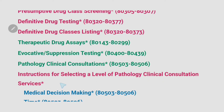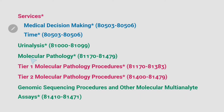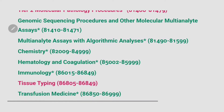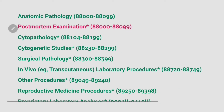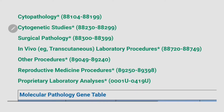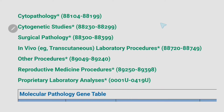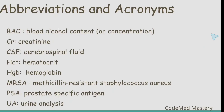Then we have instructions for selecting a level of pathology clinical consultation services, urine analysis, molecular pathology tier one, molecular pathology tier two, molecular pathology procedures, genomic sequencing procedures, multi-analytic assays, chemistry, hematology, immunology, tissue typing, transfusion medicine, microbiology, anatomic pathology, post-mortem examination, cytopathology, cytogenetic studies, surgical pathology, in vivo laboratory procedures, other procedures, reproductive medicine procedures, and proprietary laboratory analysis.